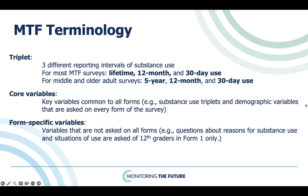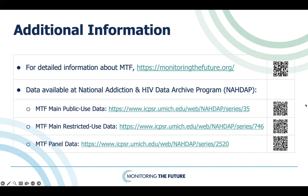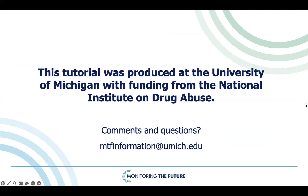Earlier in this tutorial, we explained that many questions are divided into different survey forms. Core variables refer to variables available to all forms, while form-specific variables indicate those only available on specific forms. For additional information about the MTF study, please visit the MTF website. MTF data are available at the National Addiction and HIV Data Archive Program, NADAP. Check their websites for the MTF main public use data, MTF main restricted use data, and MTF panel data. Please also stay tuned for additional tutorial videos. This ends the web tutorial providing a general overview of the MTF study. This tutorial was produced at the University of Michigan with funding from the National Institute on Drug Abuse. Voice recording was made by John Meerdink at ISR Communications. Please send comments and questions to mtfinformation@umich.edu.